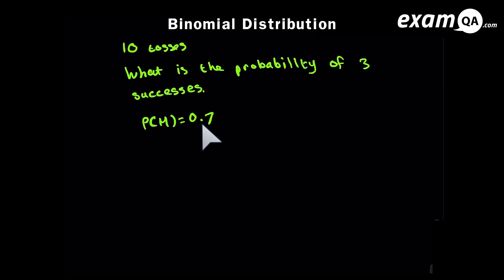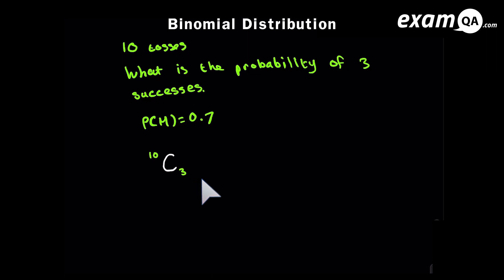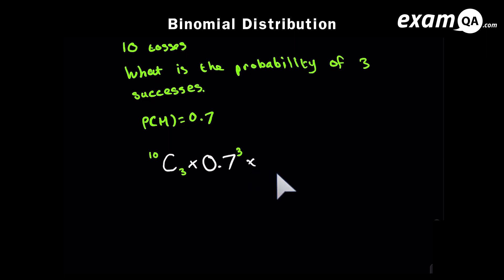We use the NCR button. Ten is there for the number of tosses — that's the N — and R is replaced with three, for how many successes you want. We times that number by the probability of success, 0.7, to the power of how many successes you want, which is three. Imagine going along your tree diagram: success, success, success, and then failures for the rest. After three successes, you go failure all the way to the end — that's 0.3 to the power of seven failures.